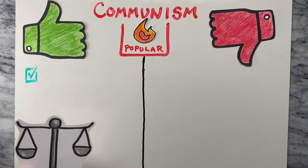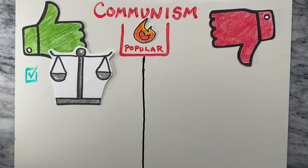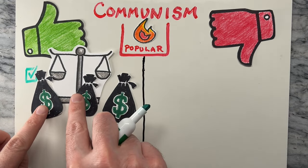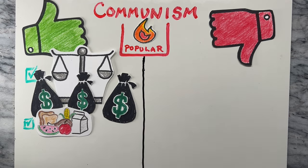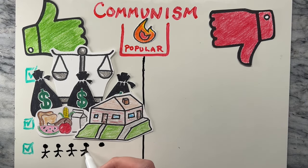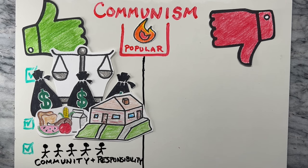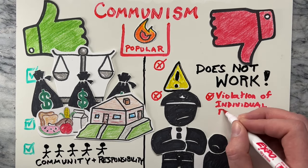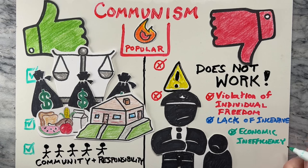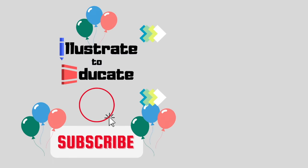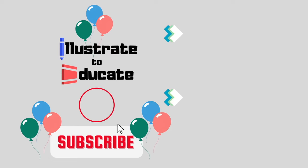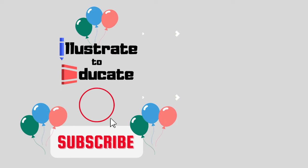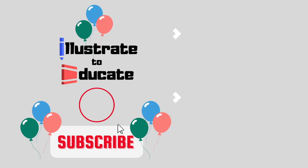Supporters of communism argue that it is the only way to create a truly just society in which resources and wealth are distributed fairly, everyone has access to basic necessities, and it promotes a sense of community and collective responsibility. However, critics argue that communism is inherently flawed and that it leads to authoritarianism, the violation of individual freedoms, lack of incentive, and economic inefficiency. What are your thoughts about communism? Leave a like and a comment, and subscribe to Illustrate to Educate to support more simple and objective videos on topics that matter.